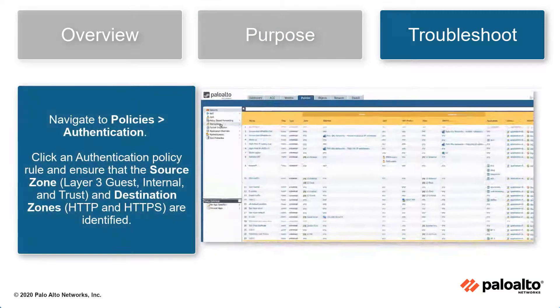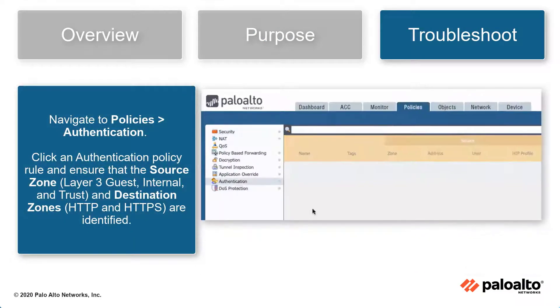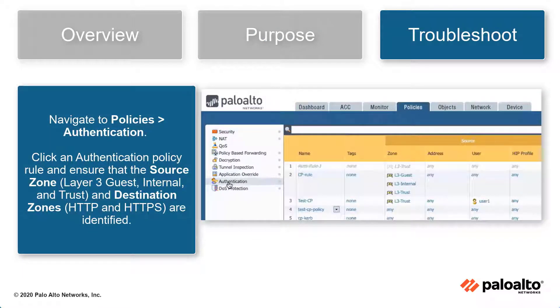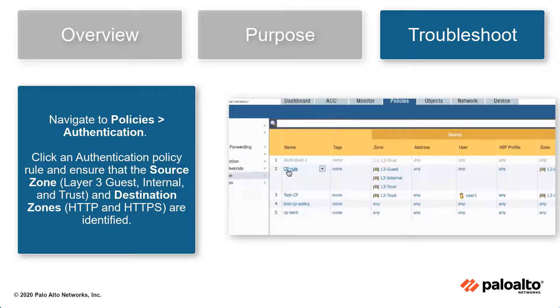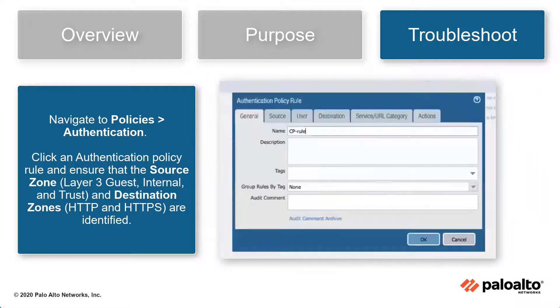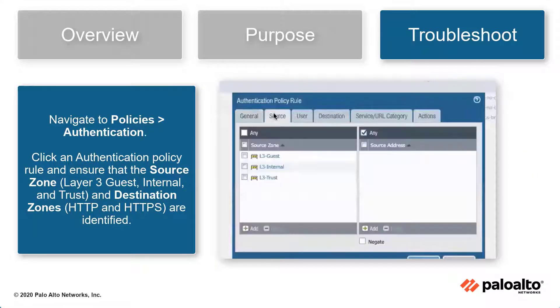Navigate to Policies > Authentication. Click an authentication policy rule and ensure that the source zones — layer 3 guest, internal, and trust — and destination zones with HTTP and HTTPS are identified.